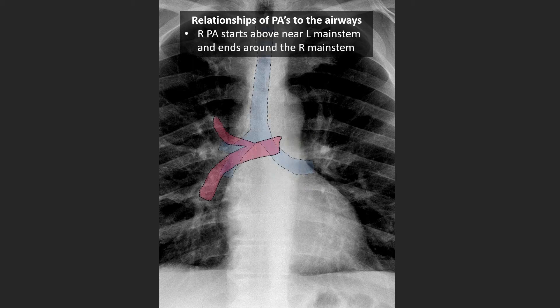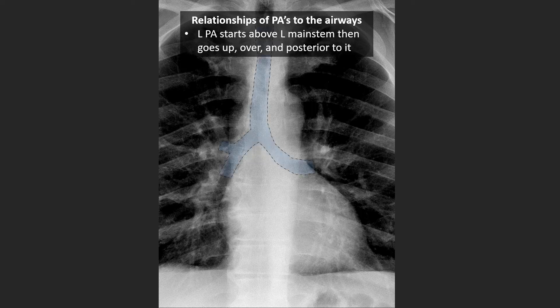The right pulmonary artery begins just at the level of the mid left main stem bronchus and terminates at the level of the mid or proximal right main stem airway — we expect it to be in this area here. The left pulmonary artery is always going to be above the left main stem airway, beginning about halfway through it and terminating out in the hilar area — we expect it to be just above the left main stem airway in this area here.